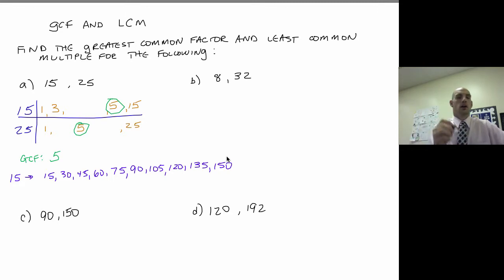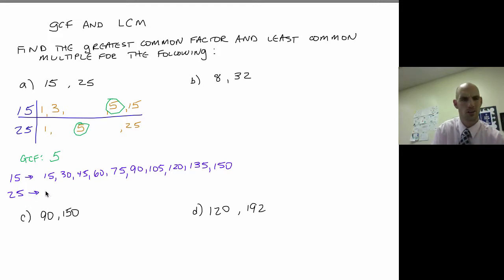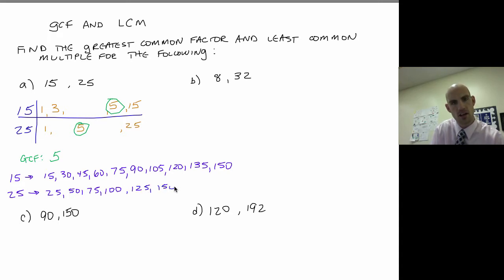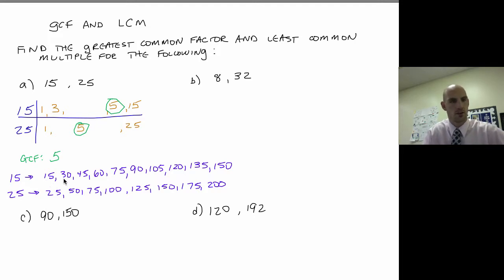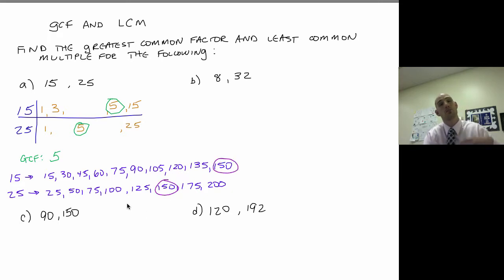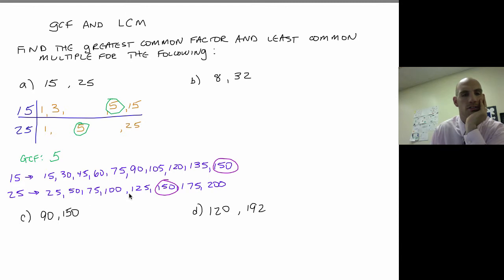Now I list the multiples of 25. I think of quarters: 25, 50, 75, 100, 125, 150, 175, 200. I want to find the smallest one that's common. Looking at both lists — 15, 30, 45 — there it is: 150. So the least common multiple of 15 and 25 is 150.